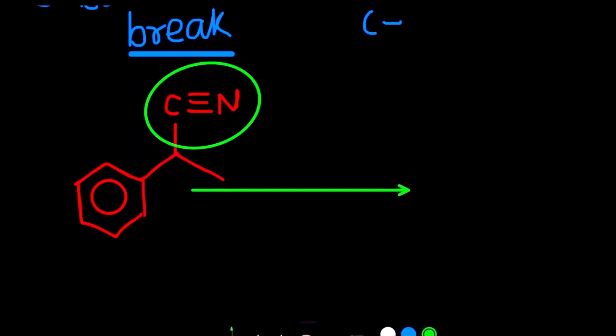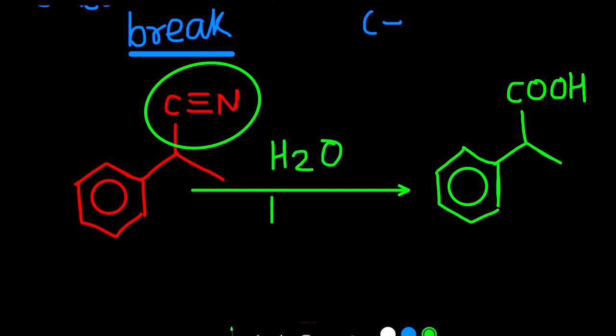Nitrile is even harder to hydrolyze than amide. Nitrile slowly hydrolyzes into carboxylic acid when heated with water and acid at high temperature. HCl amount is catalytic amount.